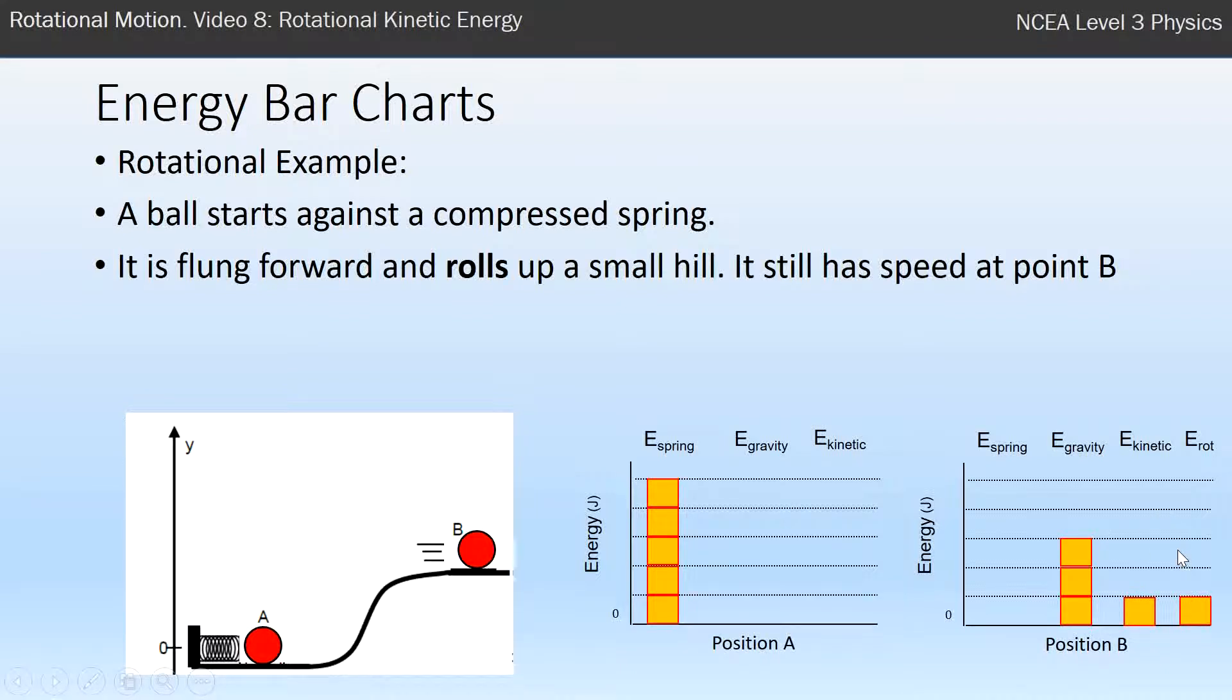So what does this tell you about the ball compared to the stack of bricks that was flung out by this spring? At point B, the ball doesn't have as much kinetic energy, linear kinetic energy, because it has some rotational kinetic energy. So it's actually not moving as fast. And we can write an equation from that. We have spring energy, which takes turn into gravitational, plus some linear kinetic energy, plus some rotational kinetic energy.